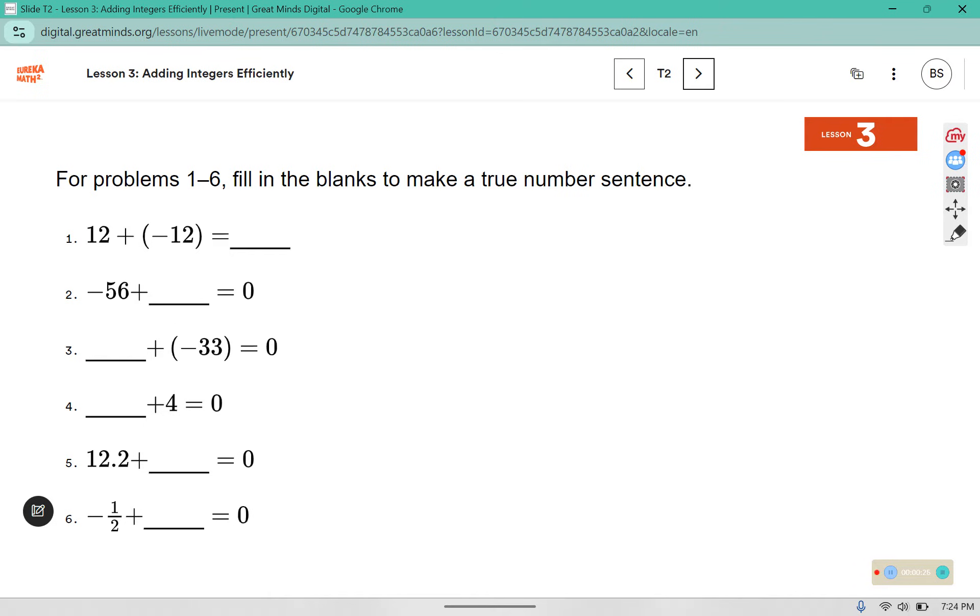For problems 1 through 6, fill in the blanks and make a true number sentence. If I add 12 and negative 12 together, that's like going right on my number line and immediately backwards, so I'm going to stick with 0 where I start. Negative 56 plus what number makes 0? That would be positive 56. We have to add opposites to get 0. So if I have negative 33, the opposite is positive 33. If I have positive 4, the opposite would be negative 4. Negative 12.2 and positive 12.2. Negative 1 half plus positive 1 half gives me 0.